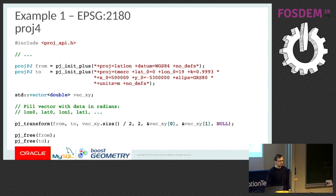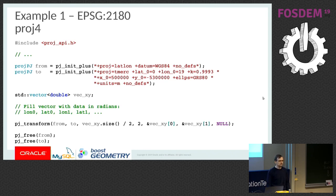In raw PROJ4, we are creating two projections. PJ_init_plus takes a PROJ4 string — a different kind of projection definition than WKT as I showed at the beginning. Then I have some array of coordinates, here a vector, and then I'm calling PJ_transform passing the coordinates. And I have to free the projections because essentially these are pointers.